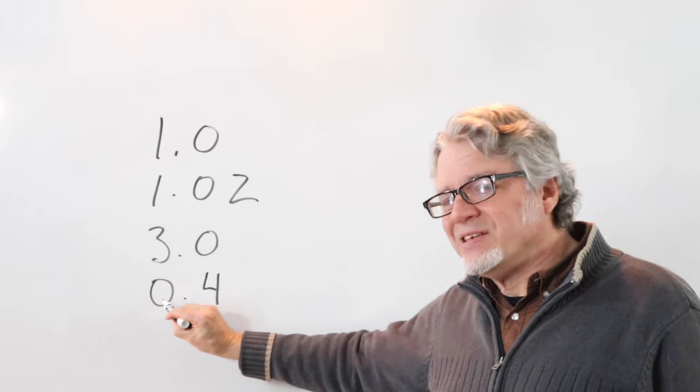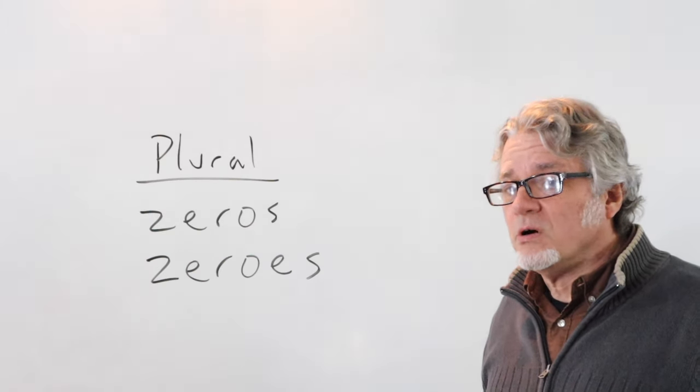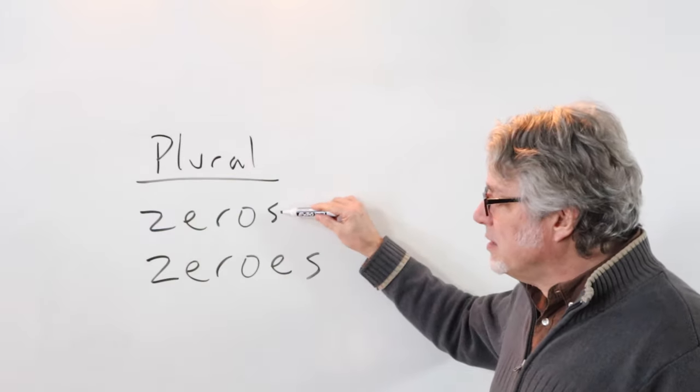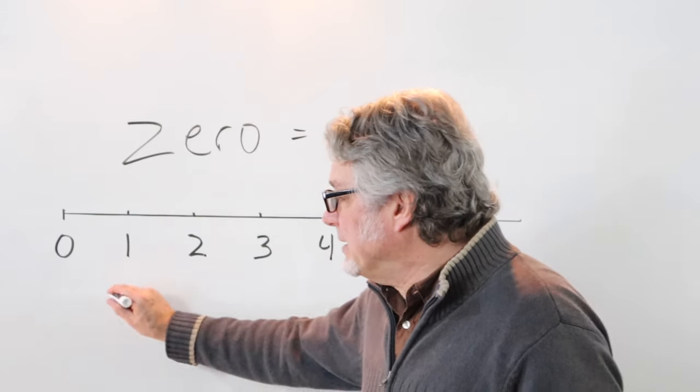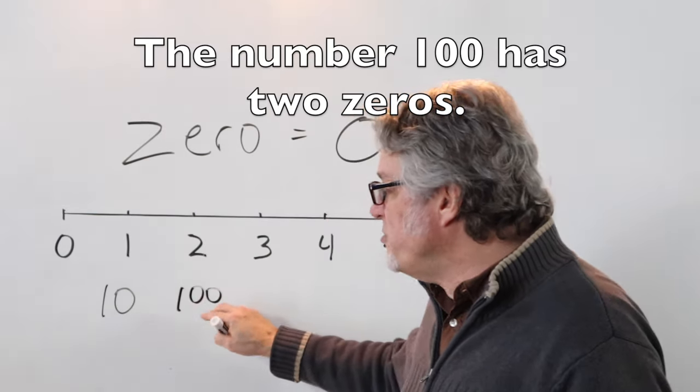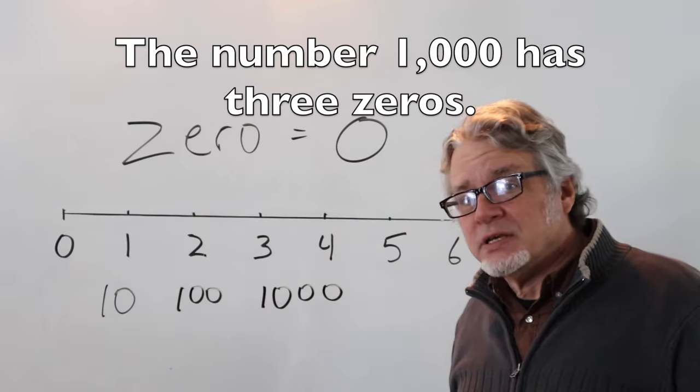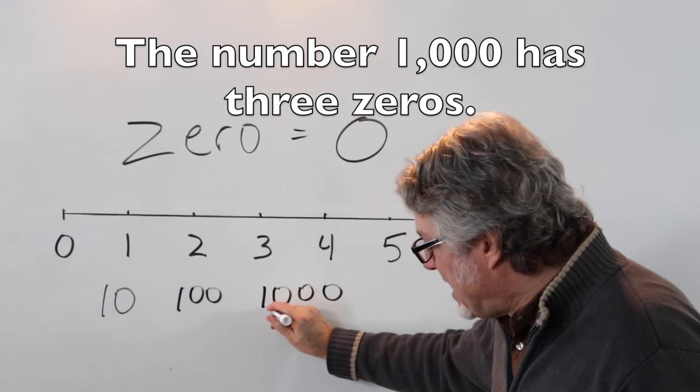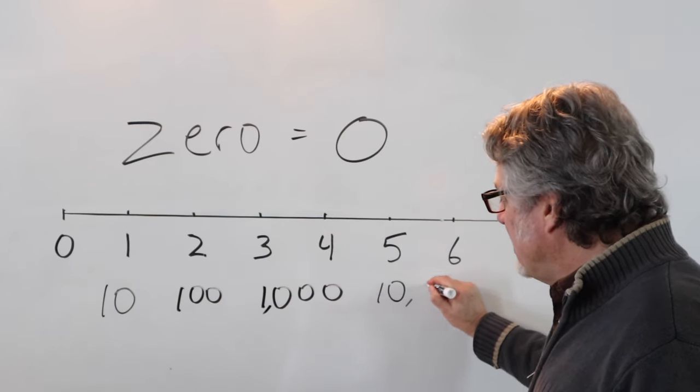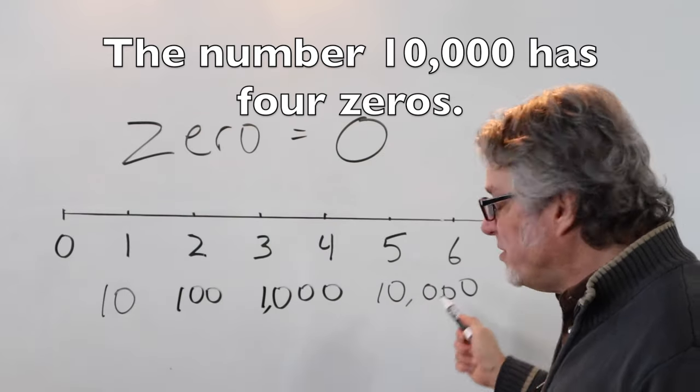There are two ways to spell the word zero when it's plural. Either version is okay, but most people here use this. The number ten has one zero. The number one hundred has two zeros. The number one thousand has three zeros. There's a comma that goes here, followed by three zeros.